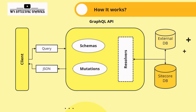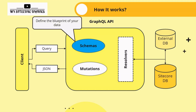The process starts with the client — any application that needs to interact with Sitecore data. The client sends a query, which is a request for specific data. Next we have the schema: it is the blueprint of your data. The schema specifies the structure of your data and the types of queries that can be performed, telling GraphQL what data is available and how it can be fetched.